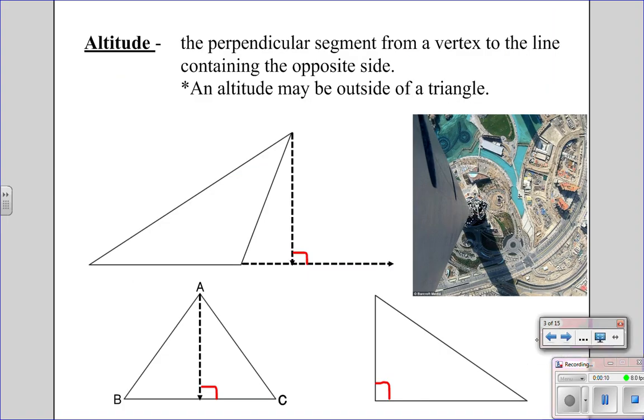The first one we'll be looking at is the altitude of a triangle. The altitude is the perpendicular segment from a vertex of a triangle to the line containing the opposite side. An altitude may be outside of the triangle, depending on the type of triangle.